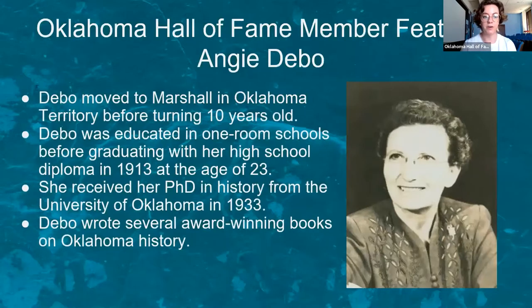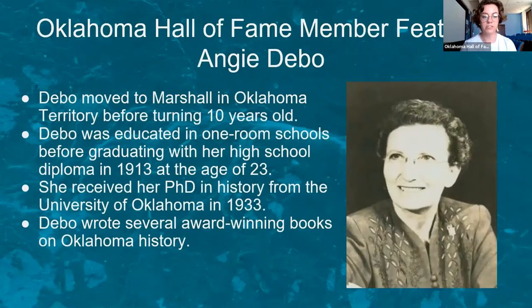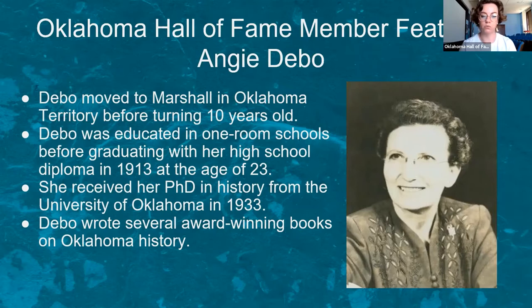And today's person is Angie DeBeau. DeBeau moved to Marshall, Oklahoma Territory before turning 10 years old. She was educated in a one-room school before graduating with her high school diploma in 1913 at the age of 23. She received her Ph.D. in history from the University of Oklahoma in 1933. DeBeau wrote several award-winning books on Oklahoma history.